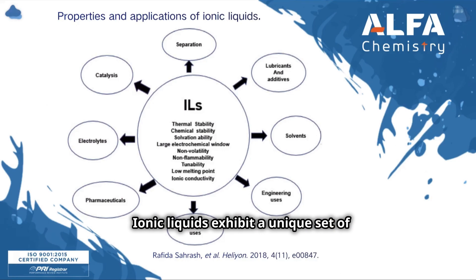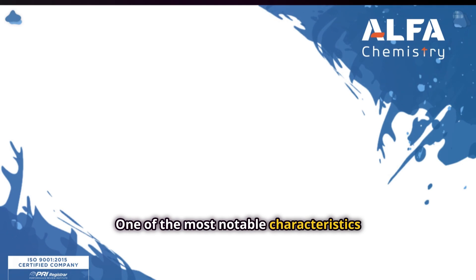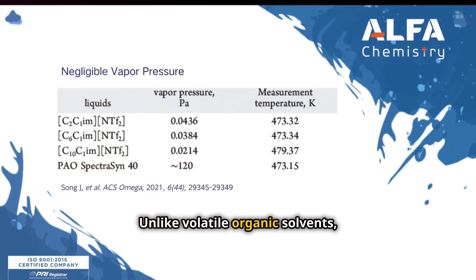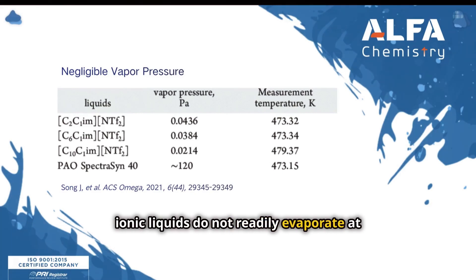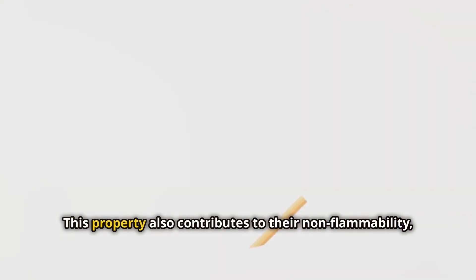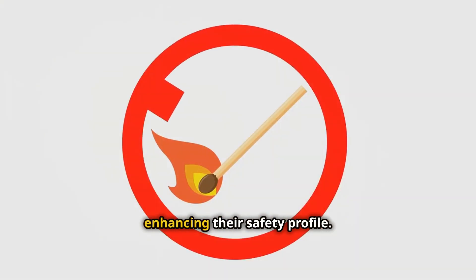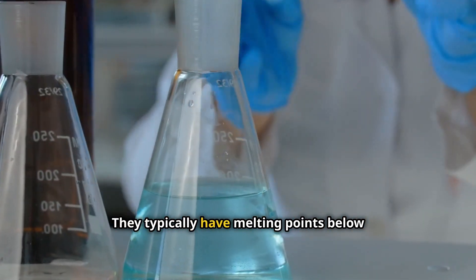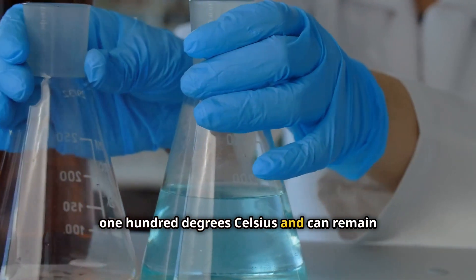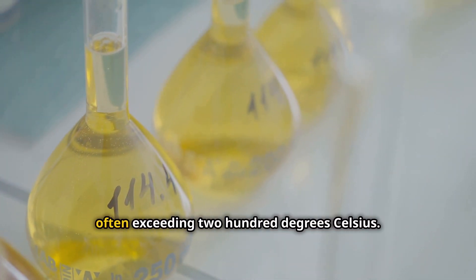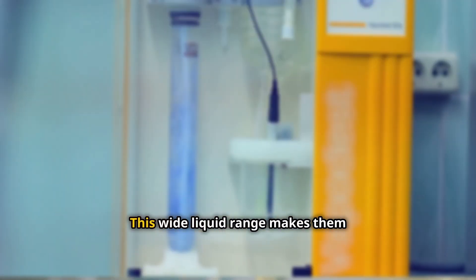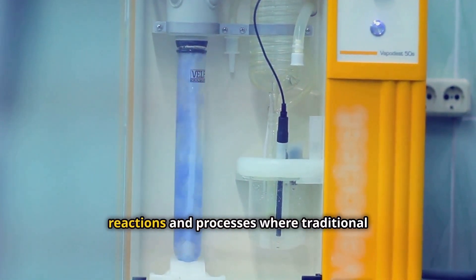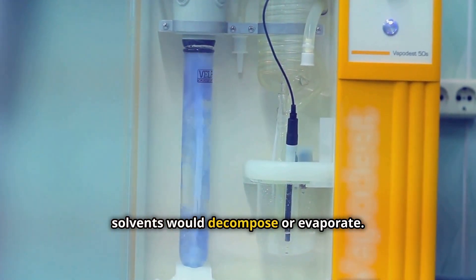Ionic liquids exhibit a unique set of physical properties that distinguish them from conventional solvents. One of the most notable characteristics is their negligible vapor pressure. Unlike volatile organic solvents, ionic liquids do not readily evaporate at room temperature, making them ideal for applications where solvent loss is undesirable. This property also contributes to their non-flammability, enhancing their safety profile. Another distinctive feature of ionic liquids is their wide liquid range. They typically have melting points below 100 degrees Celsius and can remain liquid over a broad temperature range, often exceeding 200 degrees Celsius. This wide liquid range makes them suitable for use in high-temperature reactions and processes where traditional solvents would decompose or evaporate.